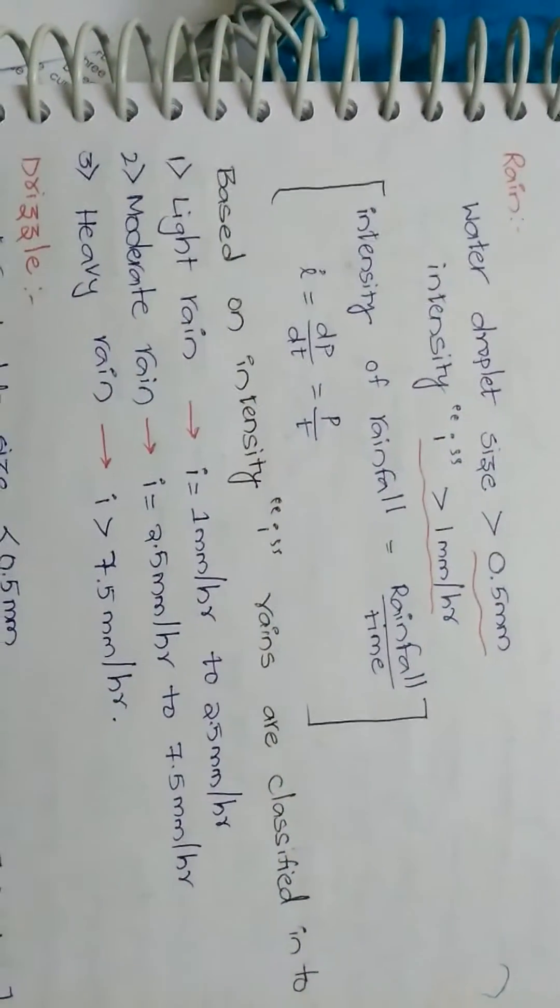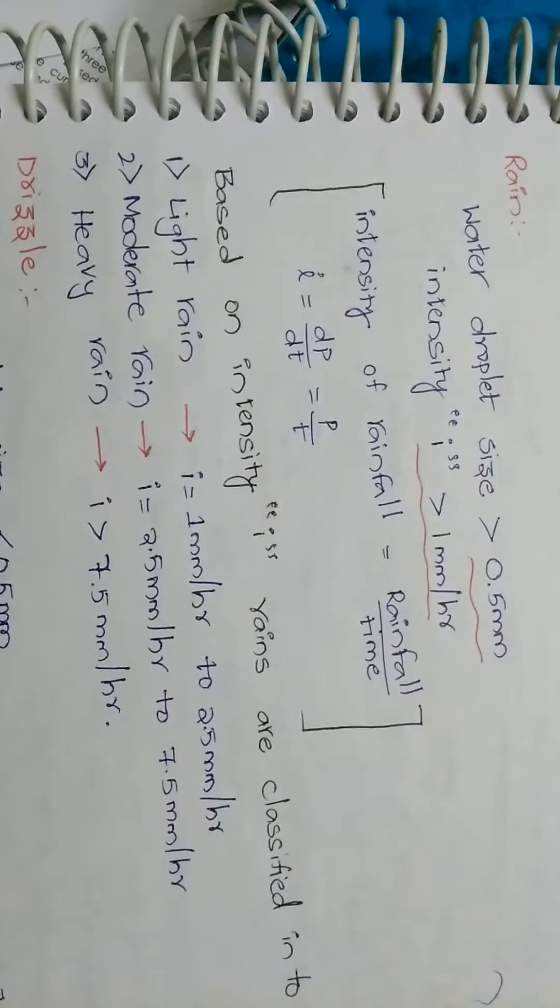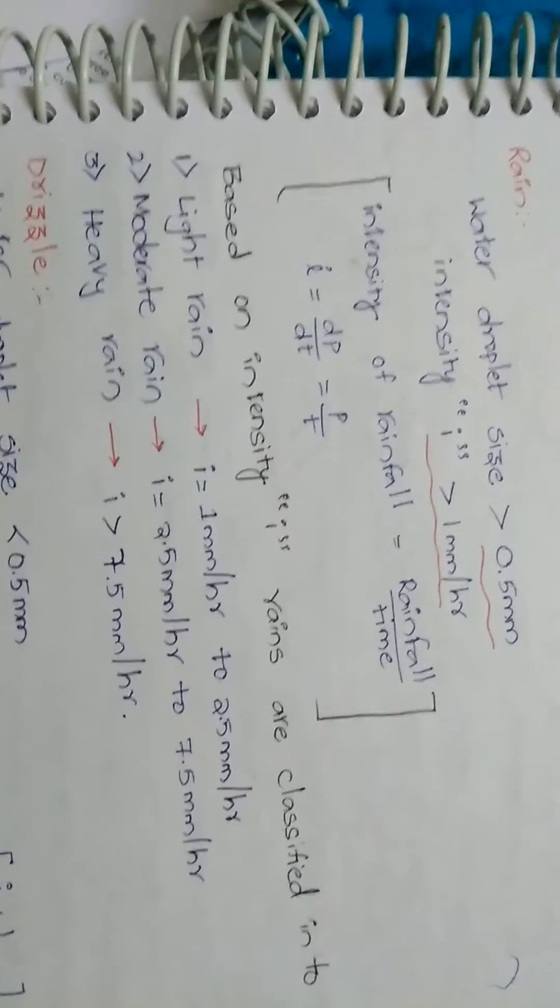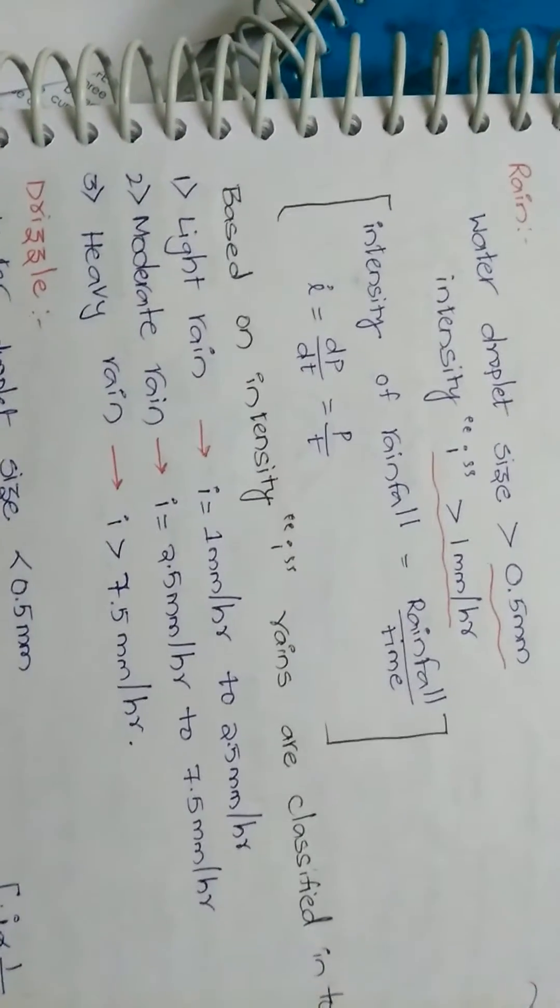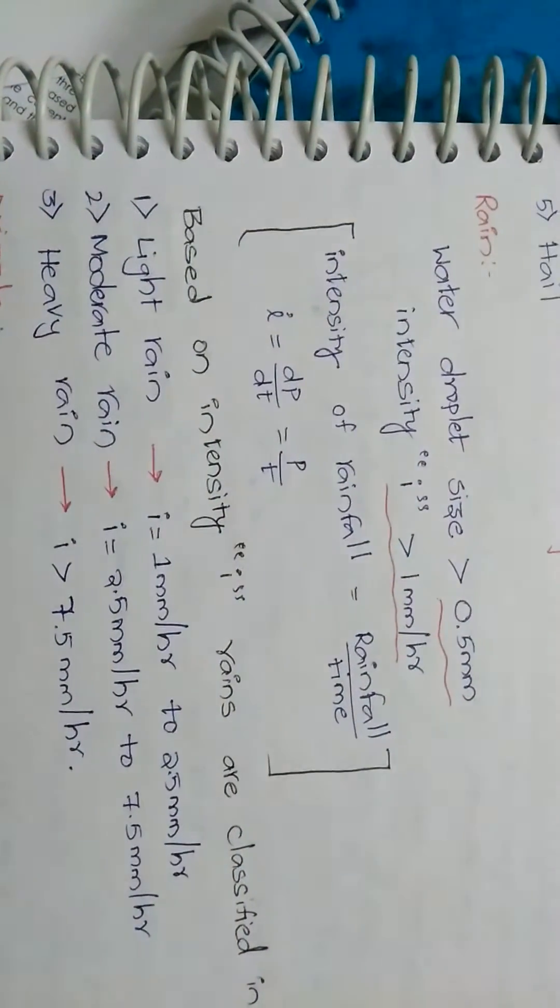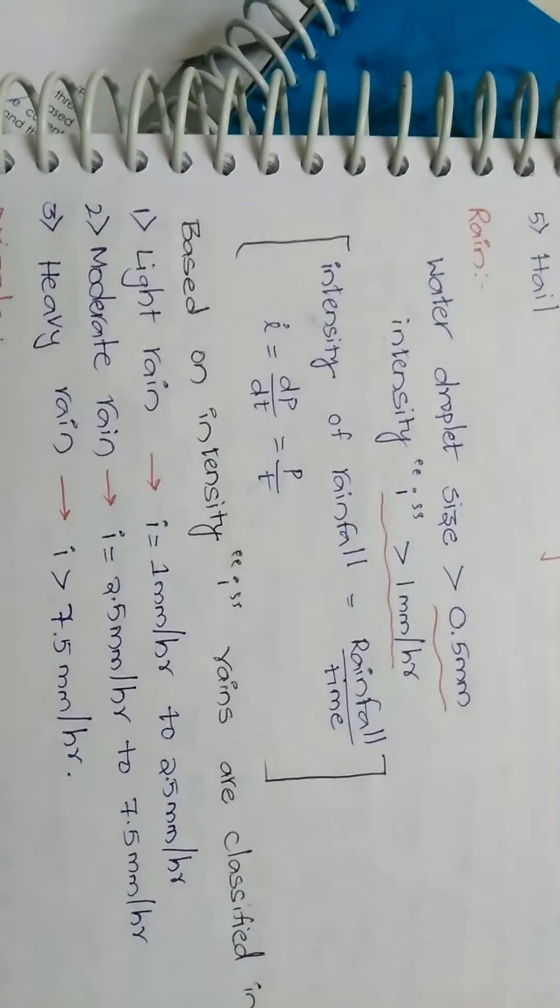Moderate rain: intensity is in between 2.5 mm per hour to 7.5 mm per hour. Heavy rain: intensity of the rainfall greater than 7.5 mm per hour.